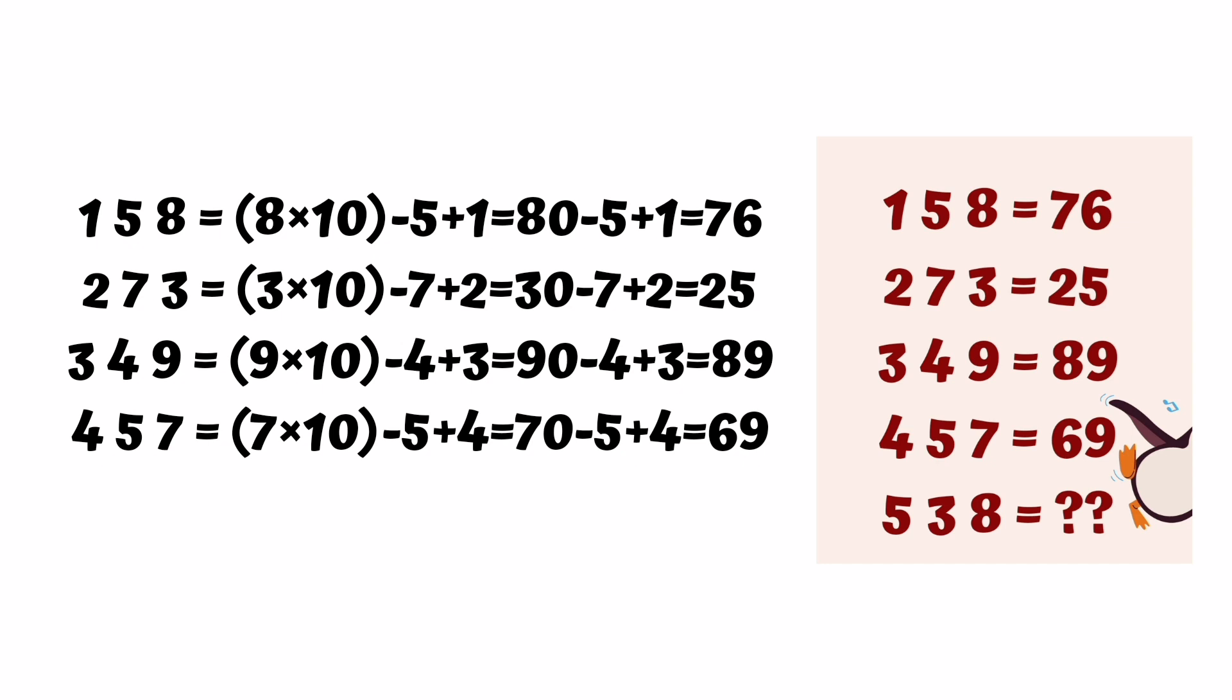Similarly for the second row, according to the trick: 3 times 10 minus 7 plus 2. Further solving: 30 plus 2 minus 7 equals 32 minus 7 equals 25.